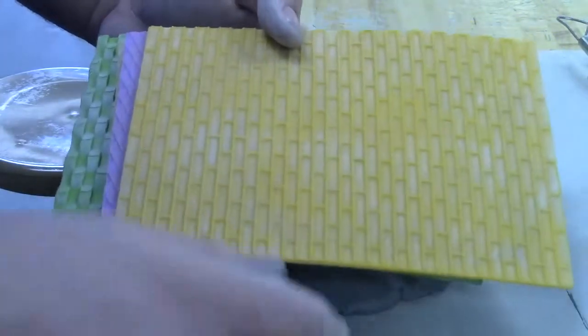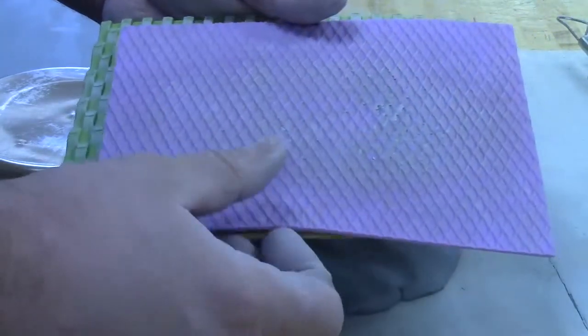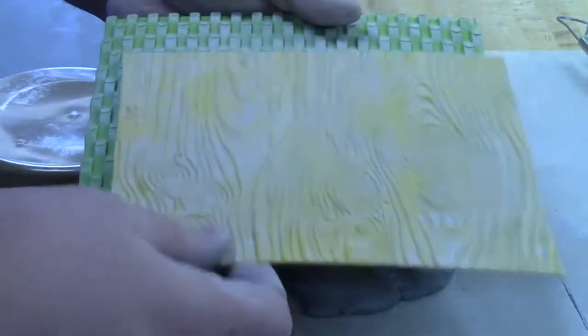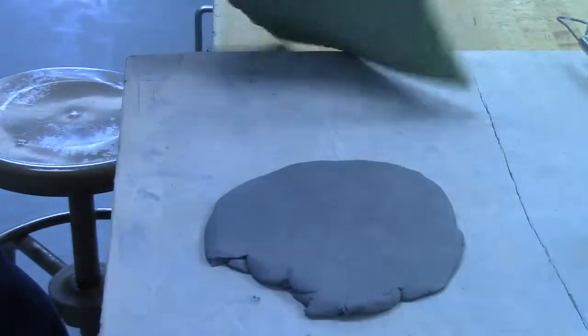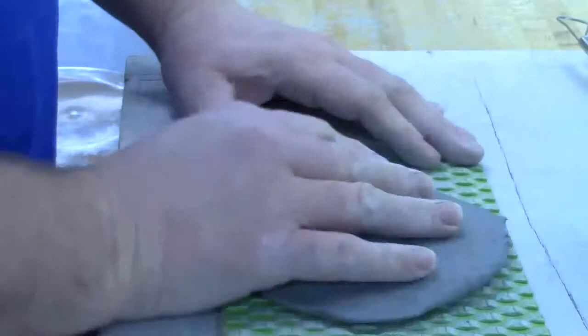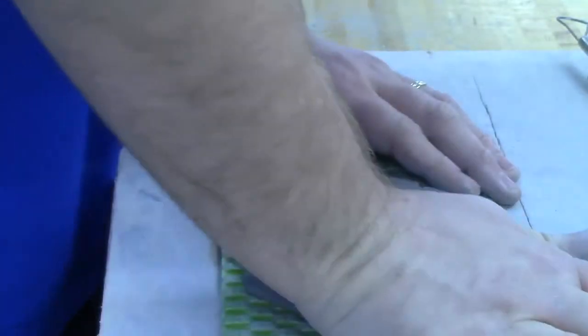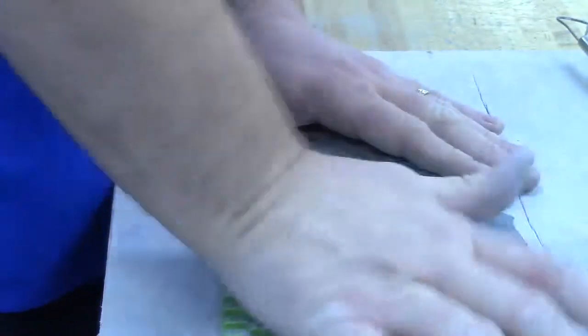Up front, we have different texture mats. And these are a real easy way to get pretty cool textures into your clay very simply. So take a slab and make a really thin slab.